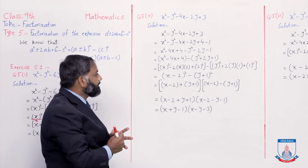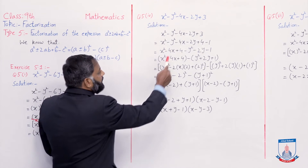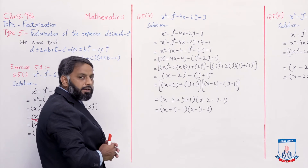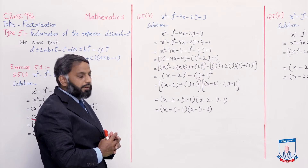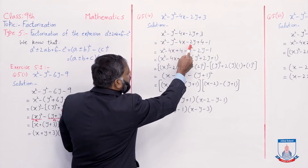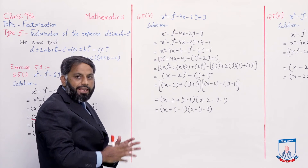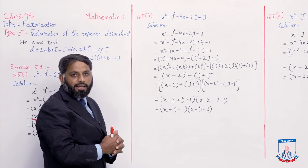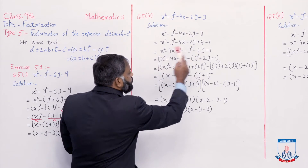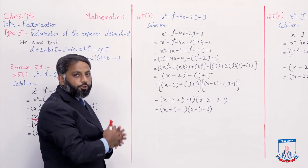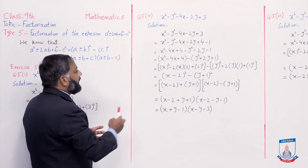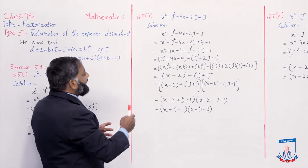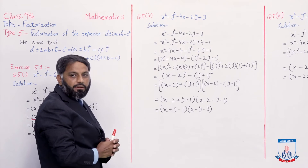To ab is mein sabse pehle humne is 3 ko 4 minus 1 likha, baaki tamam terms as it is likhi hain. Ab in pe gaur karna hai ki x² ke saath minus 4x plus 4 — in teeno ko ikathe likhein to ek perfect square ban jaayega. Isi tarah minus y² minus 2y aur minus 1 — in teeno terms ko ikathe likhein aur minus common le lein to yeh bhi ek perfect square ban jaayega. Sabse pehle humne jo perfect square ban sakti thi un terms ko ikathe likha. Uske baad in last three terms mein se minus common le liya, jisse tamam terms ke sign positive ho gaye.